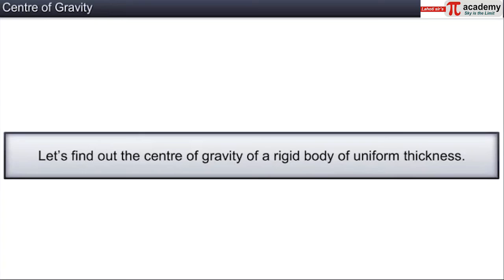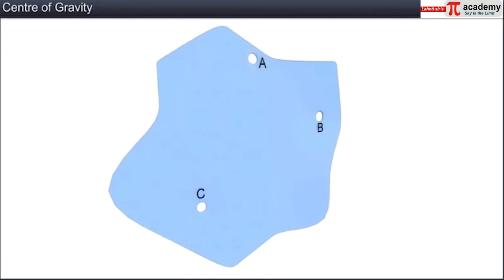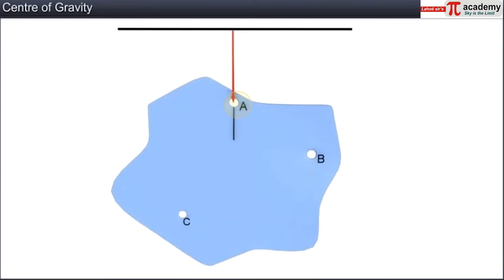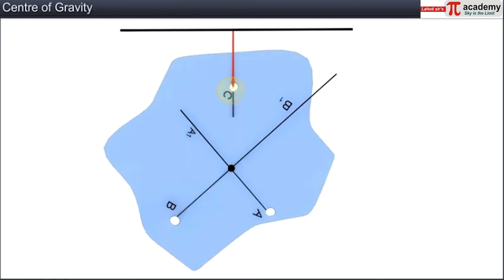We have another useful method to find the center of gravity of a rigid body of uniform thickness. Take the body and mark three points A, B, and C at three positions. Suspend the body from A and draw a vertical line AA1; then suspend it from B and draw a vertical line BB1. The intersecting point of the three lines is the center of gravity of the body.